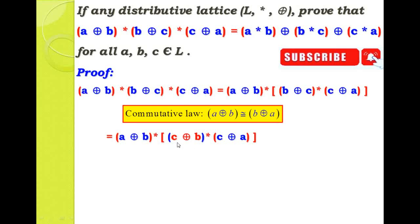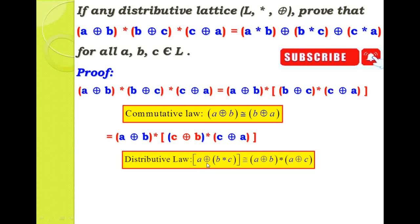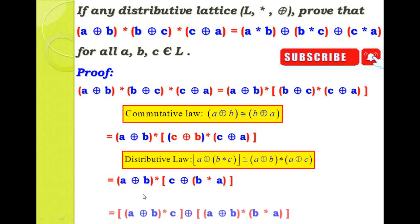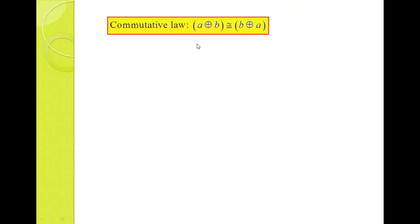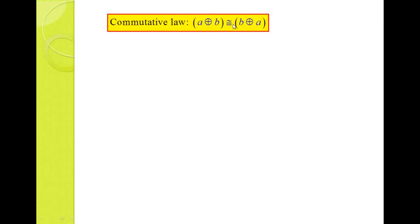In this equation, C direct sum C — direct sum is common, so we take it outside. Using distributive law: A direct sum (B star C) can be written as (A direct sum B) star (A direct sum C). Using this distributive law we get: A direct sum B, star C direct sum B, star C direct sum B, star A. Now using once again distributive law — the right-hand side distributive law. I am going to write this term first as B star A, star A direct sum B, then using commutative law once again: A plus B equals B plus A, otherwise A star B equals B star A.